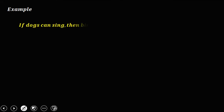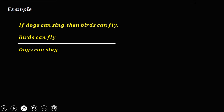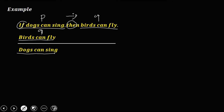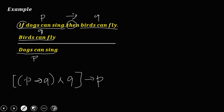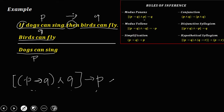Let's have the second example: If dogs can sing, then birds can fly. Birds can fly. Therefore, dogs can sing. We create an equation: 'dogs can sing' is P, 'if...then' is implication, 'birds can fly' is Q. So P → Q, conjunction Q, therefore implies P. The equation is (P → Q) ∧ Q → P. We check in the rules of inference — this equation is not found. So we need to create a truth table to identify if this argument is valid or invalid.